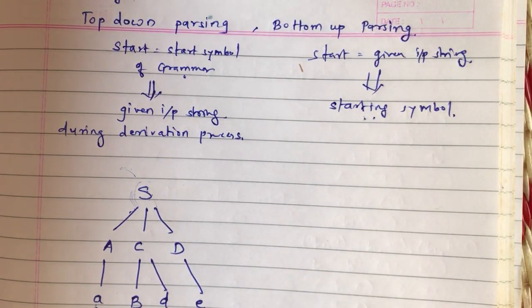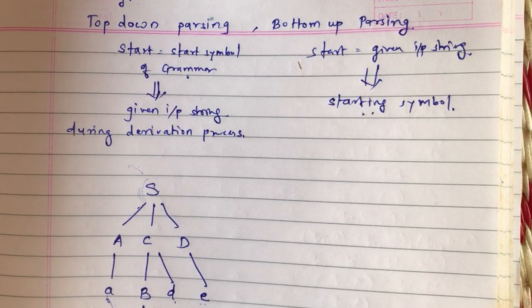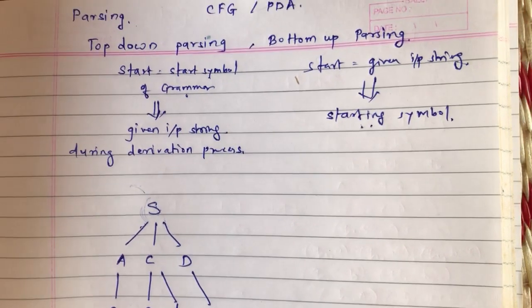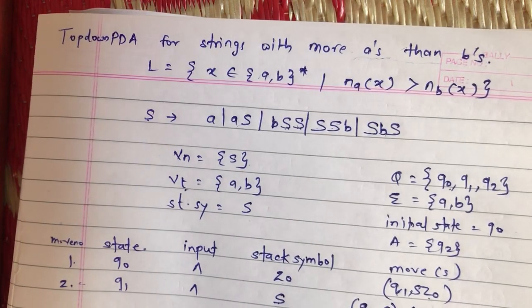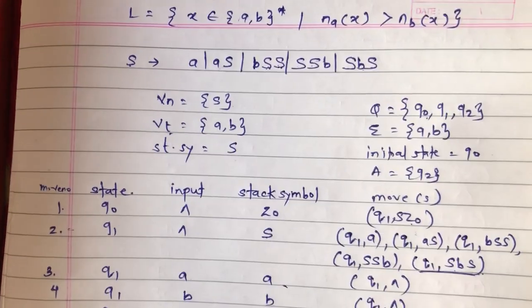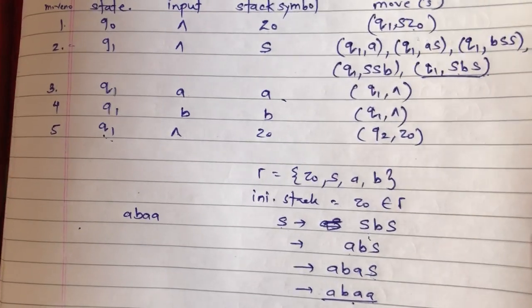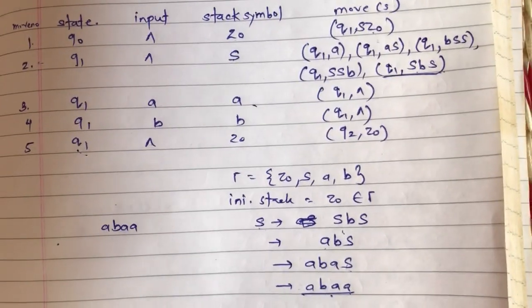For top-down parsing, we have already seen an example in the previous lecture. If you get a short-note type of question on top-down parsing, you can refer to that top-down PDA example — first construct a grammar, then using grammar-to-PDA rules write the deltas, solve one derivation and the ID notation. That covers top-down PDA. Now let us see and understand one example of bottom-up parsing in today's video.